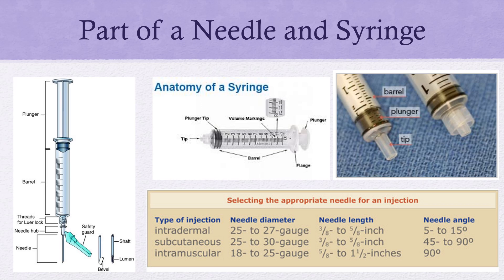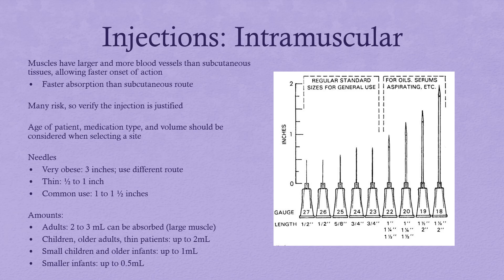The next thing we need to look at is the different gauges of needles — how big the needle is. It's important to note that the larger the gauge, the smaller the needle. Looking at this picture, you can see a 27-gauge needle on the left is a very small, thin needle, one you might use for an intradermal injection. On the right, an 18-gauge needle is much larger, and you would use that for an intramuscular injection or drawing blood.